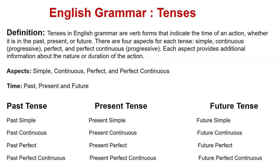Aspect — don't get confused. Aspect is the situation of the action. If the action is in the past, what is the situation? Simple, continuous, perfect or perfect continuous. If the action is in the future, what is the aspect? Simple, continuous, perfect or perfect continuous.